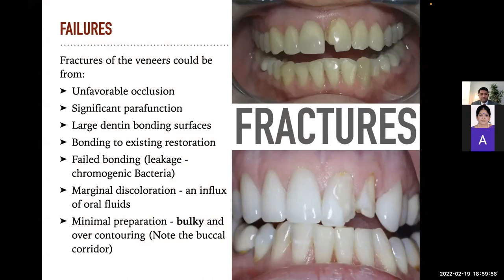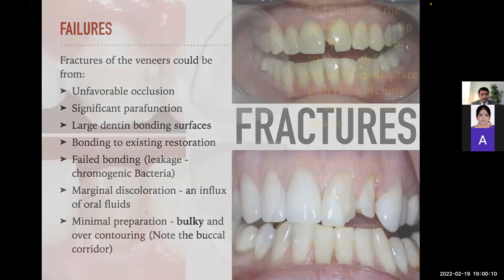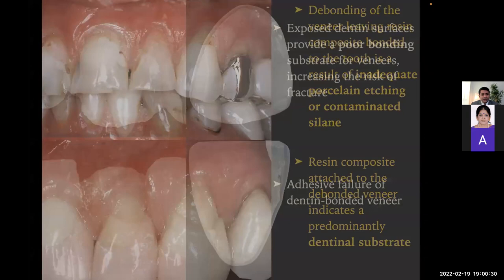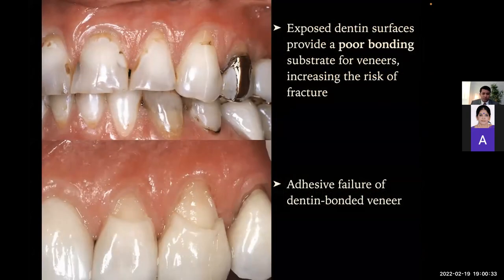Debonding of the veneer leaving resin composite bonded to the tooth is a result of inadequate porcelain etching or contaminated silane. The resin composite attached to the debonded veneer indicates a predominantly dentinal substrate. Exposed dentine surface provides a poor bonding substrate for veneers, increasing the risk of fracture and adhesive failure of dentine-bonded veneers. That's why this veneer procedure is technique sensitive.